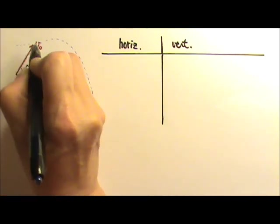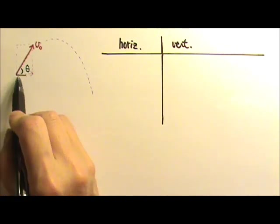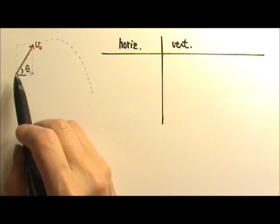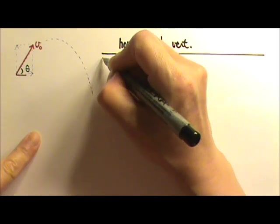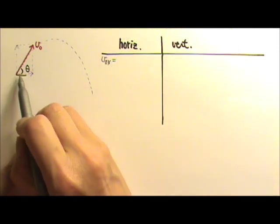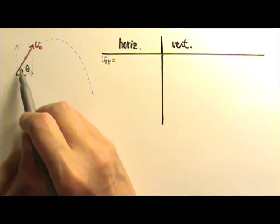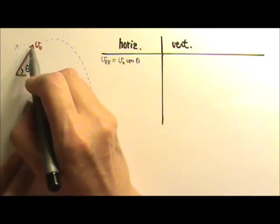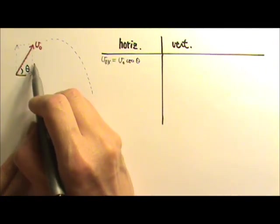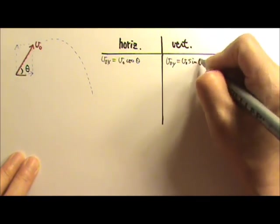So again, we're making a rectangle. And this here is the horizontal component of the initial velocity VO. And that one is the vertical component of the initial velocity. So the horizontal initial velocity, again, it's adjacent to the angle, so it's the hypotenuse times cosine theta, VO cosine theta. The vertical component is the same as this side, which is opposite to the angle. So the vertical component is VO times sine theta.